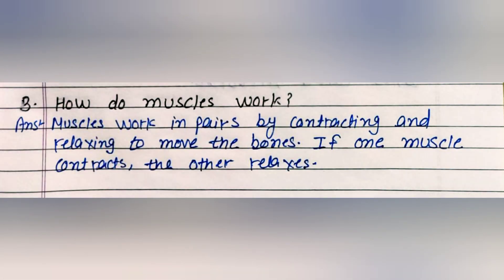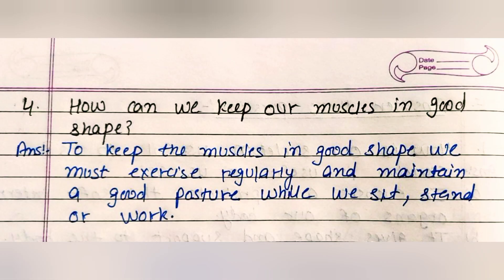Question three: How do muscles work? Muscles work in pairs by contracting and relaxing to move the bones. If one muscle contracts, the other muscle relaxes. Question four: How can we keep our muscles in good shape? To keep the muscles in good shape, we must exercise regularly and maintain a good posture while we sit, stand, or work.